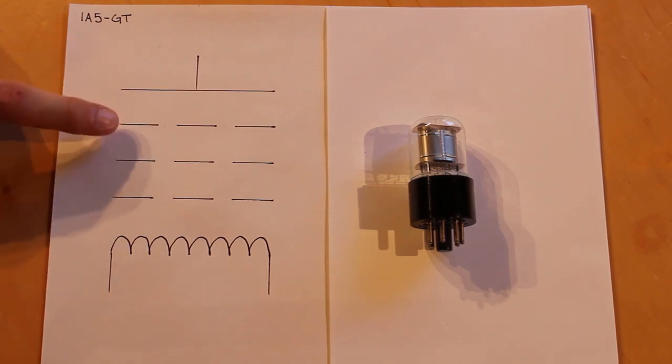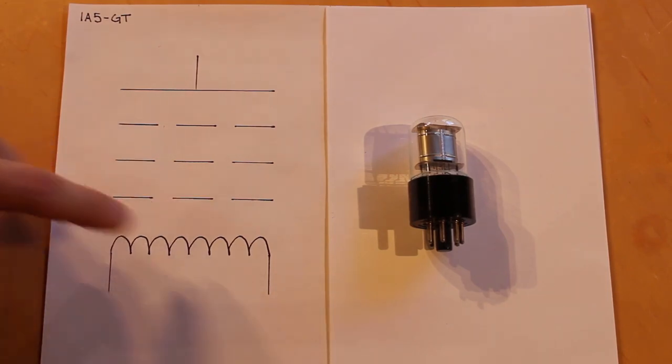And then it's a directly heated pentode. So you'll notice that we have a plate, three grids. This is going to be control grid, screen grid, and then suppressor grid. But you'll notice that we don't have a separate cathode and that's because the filament itself acts as the cathode.